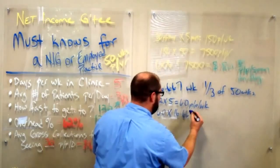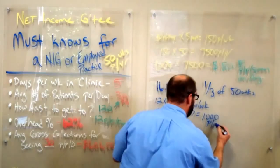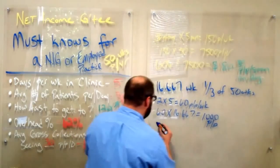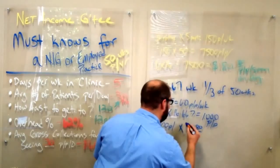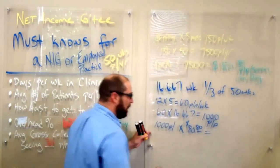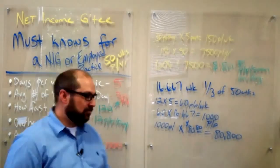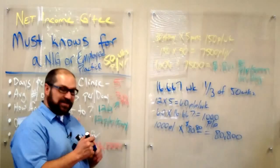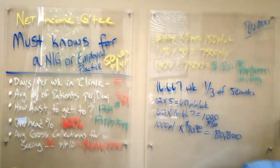So 12 patients per day times 5 is 60 per week, patients per week. 60 times 16.667 is roughly 1,000 patients per that period. So now we take 1,000 patients and we multiply it by $80.80, because that's what we're getting on average per patient seen. So what does that equal out to? That's $80,800 in collections over that first four months.